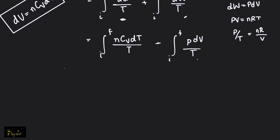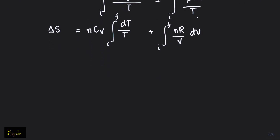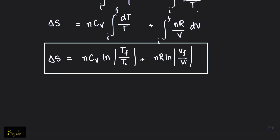Proceeding with this, delta S is the integral of nCv dT over T, plus the integral of nR dV over V. Since n, Cv, and R are constants, doing some simple calculus, delta S equals nCv ln(Tf/Ti) plus nR ln(Vf/Vi). This is the change of entropy in an isobaric process.